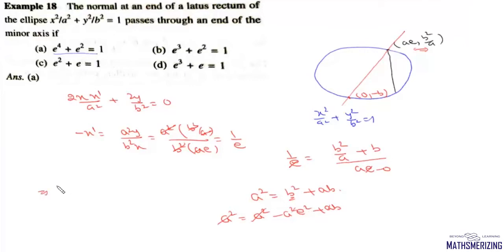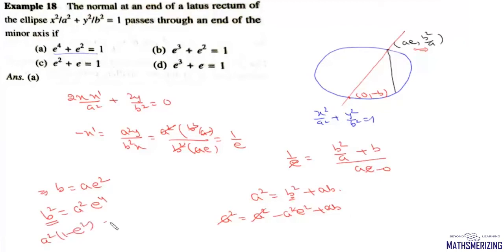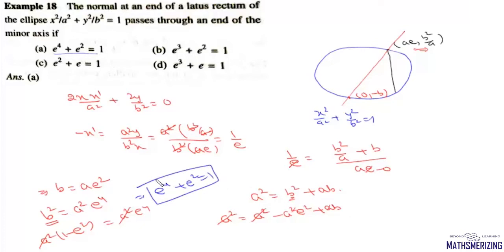Cancelling a², we get b = ae². Squaring both sides: b² = a²e⁴. Since b² = a²(1 − e²), we have a²(1 − e²) = a²e⁴. The a² cancels, giving e⁴ + e² = 1, which is option (a).